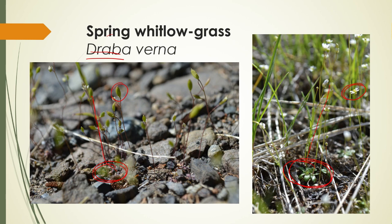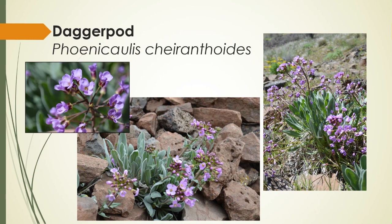That was Spring Whitlow Grass — a bit of an odd one. Some other beauties from the shrub steppe include Dagger Pod, with really showy purple-lavender flowers and fuzzy gray-green leaves. It does well among the rocks. The flowers get up to about a half inch across, and the siliques grow a couple inches long and are slightly curved. What makes the leaves grayish is very branched hairs — if you look at them under a hand lens, you'll find a beautiful microscopic gem.